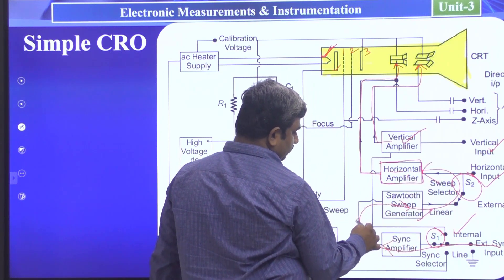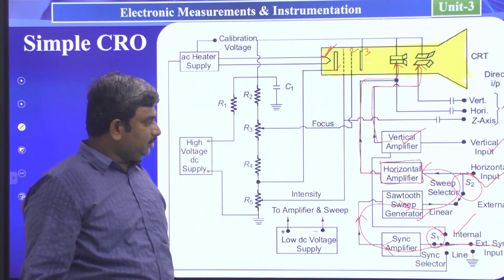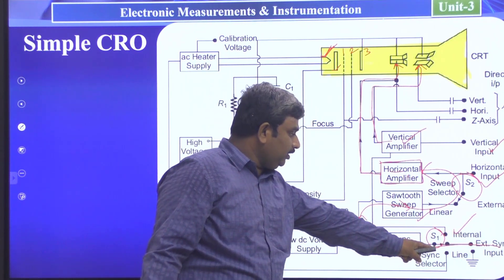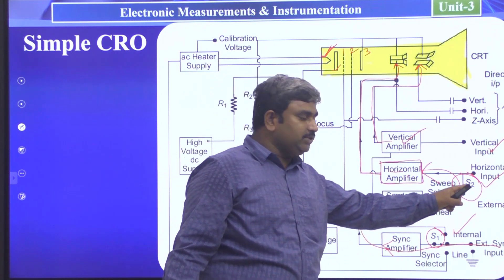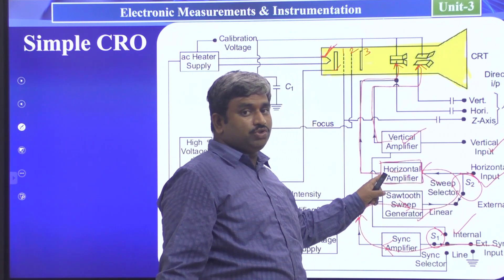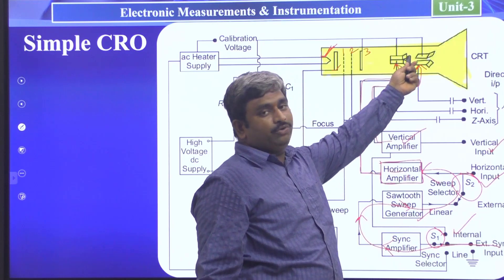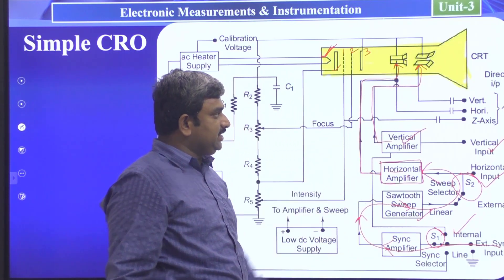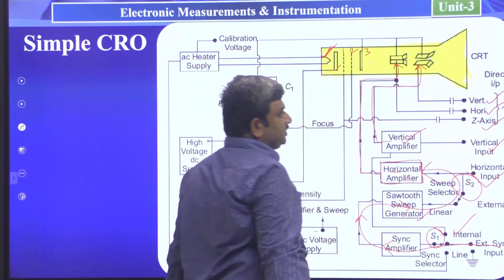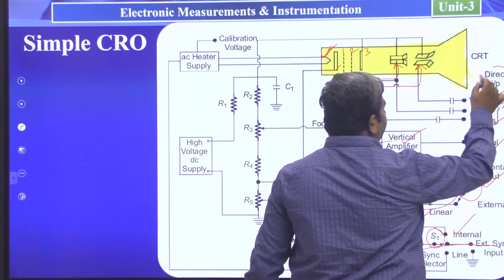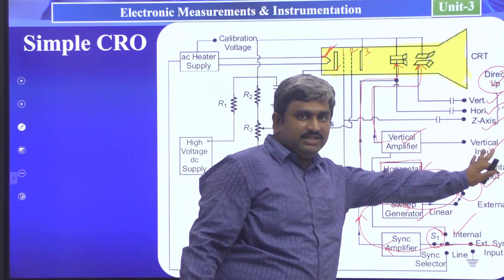The complete path is: external sync input → S1 switch → sync amplifier → sawtooth wave generator → S2 function switch → horizontal amplifier → horizontal deflection plates. We have a vertical input section, horizontal input section, and Z-axis input section — these three are the direct inputs in this block diagram. The right side part is now complete.